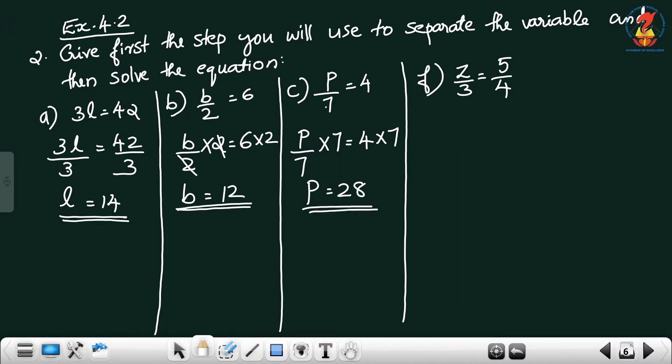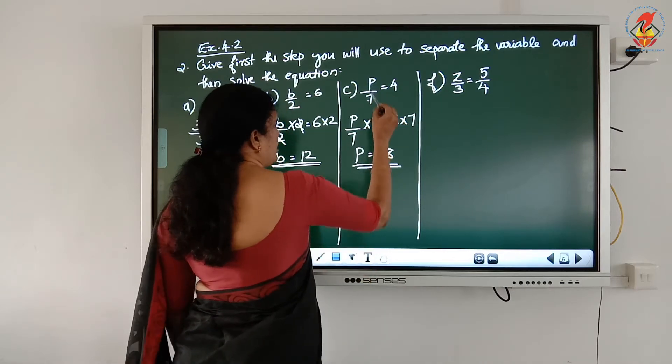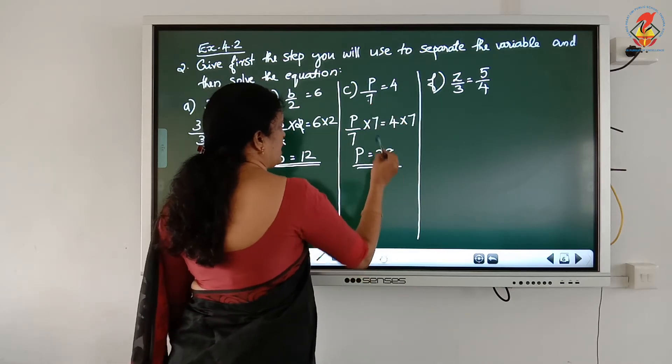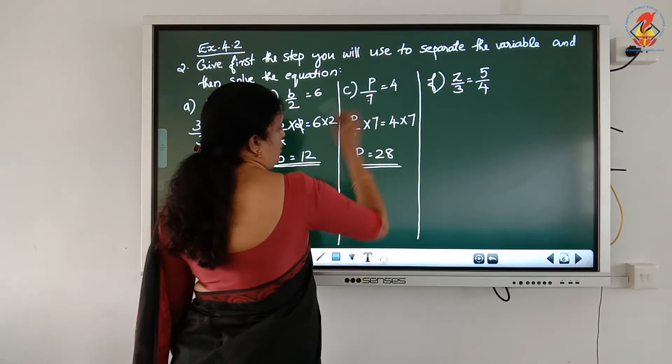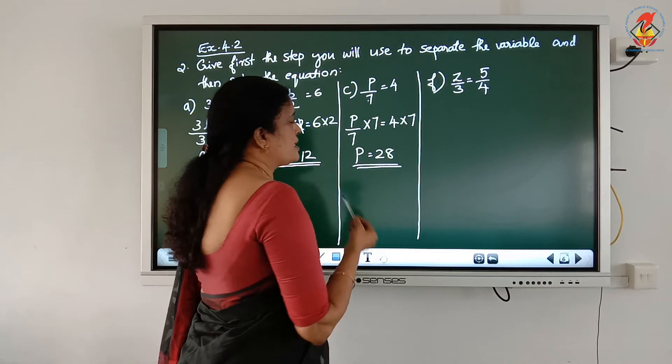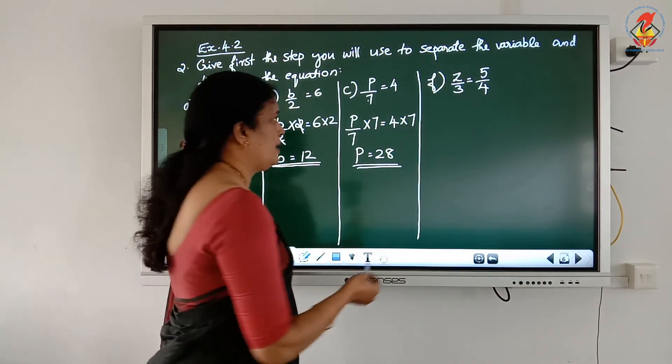P = 28 is the answer. You can check your answer: substitute 28 in the place of P — 28 divided by 7 equals 4. Then LHS and RHS are both the same.